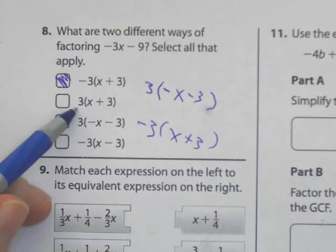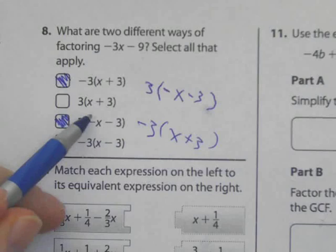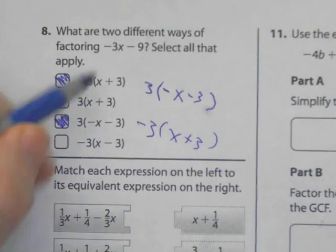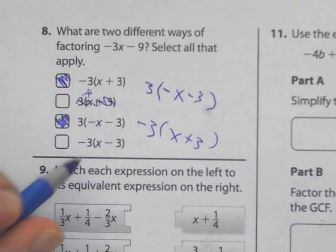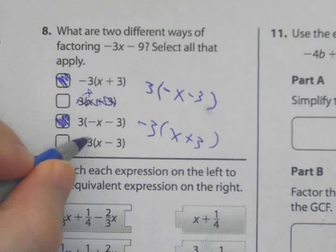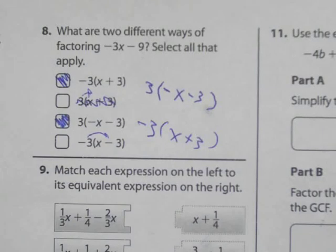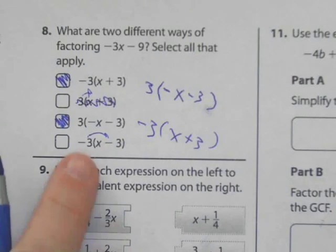3 times x gives me positive 3x. That's why that one's wrong. 3 times x gives me positive 3. 3 times 3 gives me positive 9. This one's the exact opposite. Can't use it. This one here is negative 3x. And when I get to here, a negative times a negative gives me positive 9. So, it's half right, half wrong.